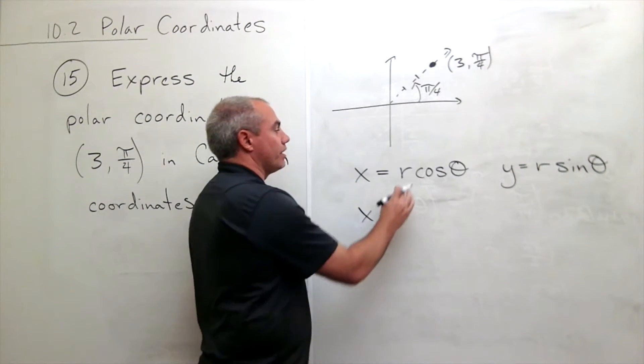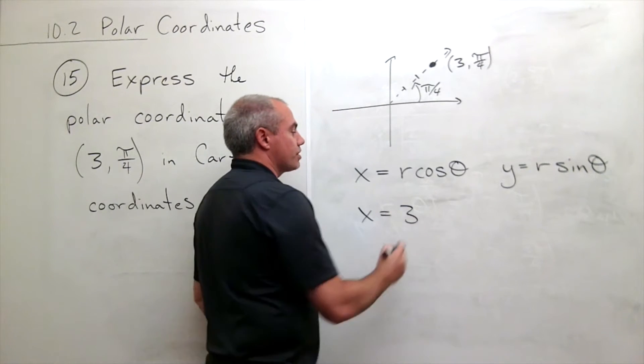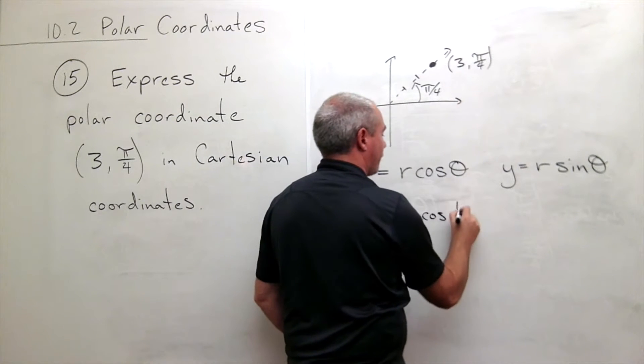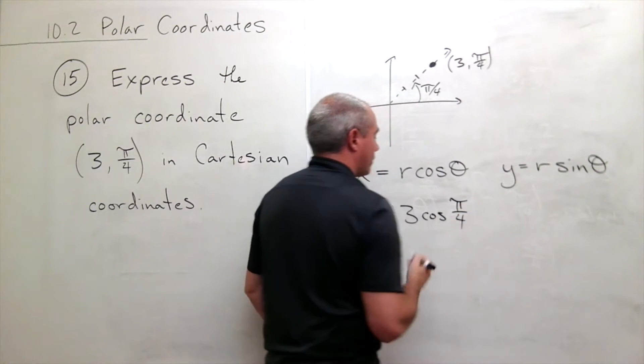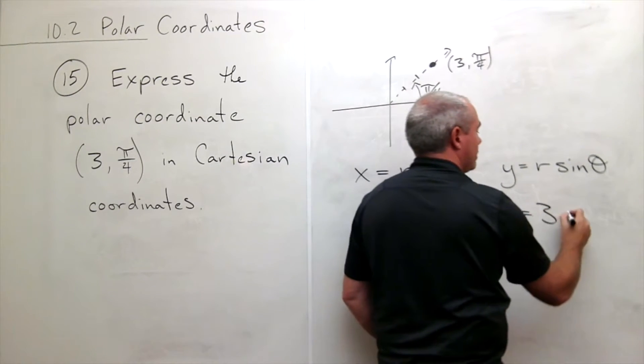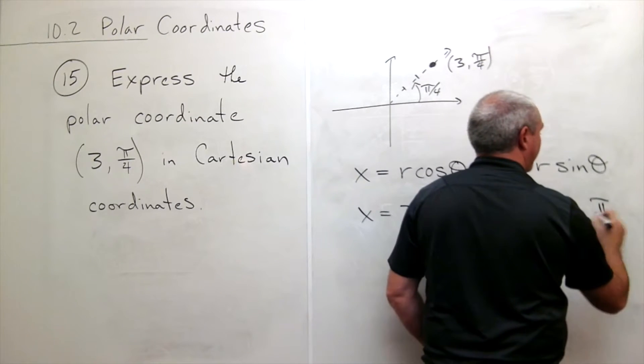So if I want to know what my x coordinate is here, my x coordinate is going to be r, which in this case is 3, times cosine of θ, and θ is π/4. Similarly, y is equal to r, which is 3, sine of θ, which is π/4.